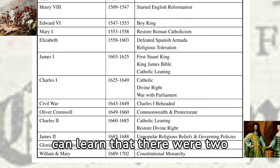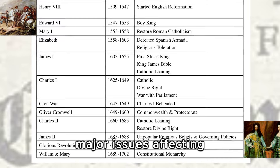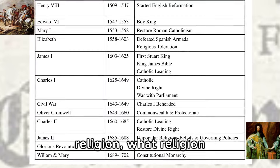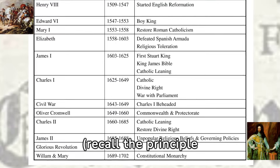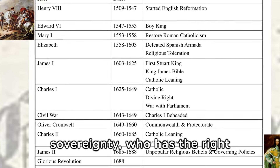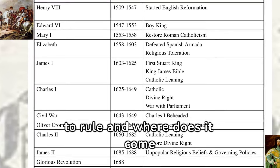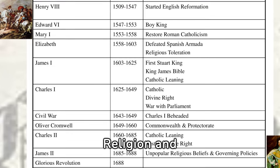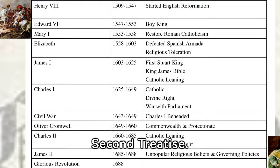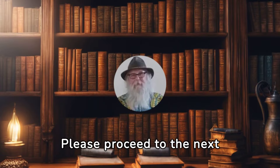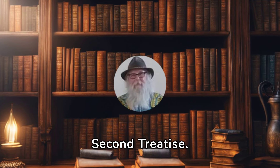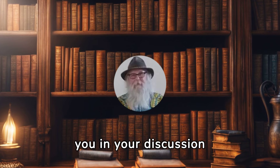From this timeline, we can learn that there were two major issues affecting English politics in the 17th century. Religion: what religion would the state mandate? Recall the principle cuius regio eius religio. And sovereignty: who has the right to rule and where does it come from? Religion and sovereignty — this will give us sufficient background to consider Locke's Second Treatise. Please proceed to the next lecture, which is a discussion of the content of Locke's Second Treatise. These videos will help you in your discussion assignment.